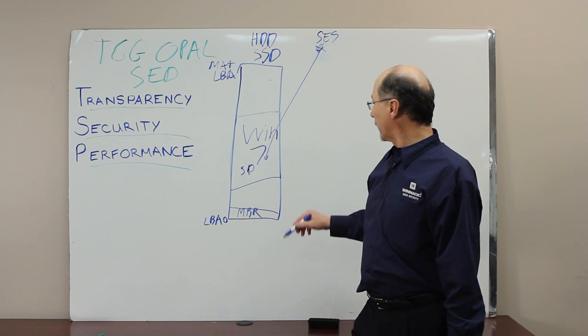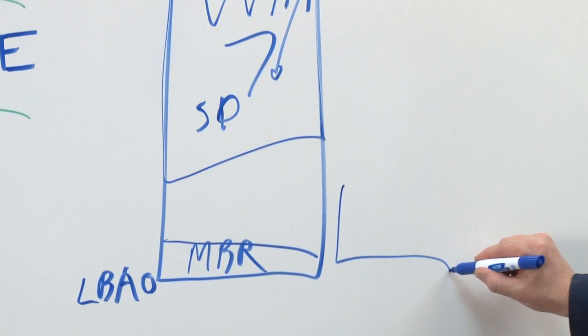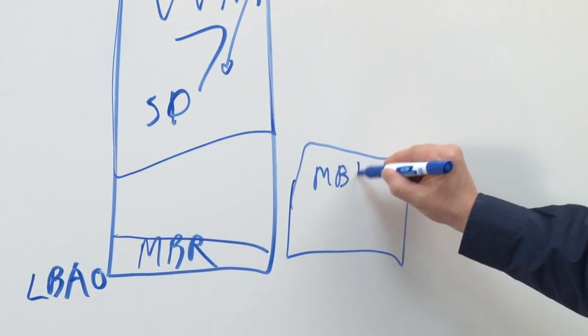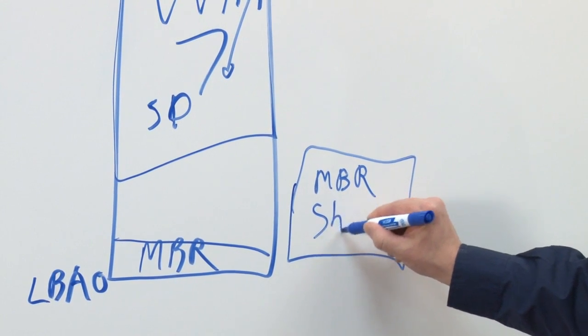But let's say it's an Opal drive. So one of the first things it does is it creates something called an MBR shadow.